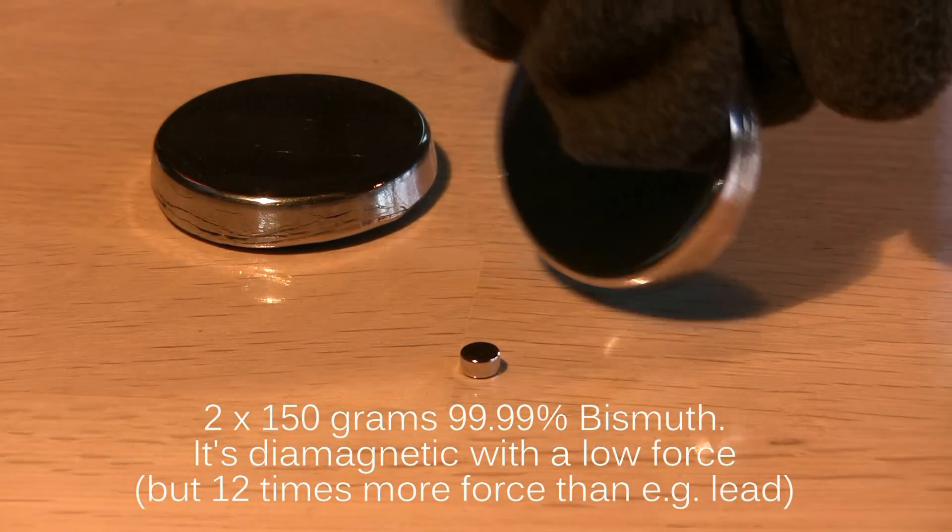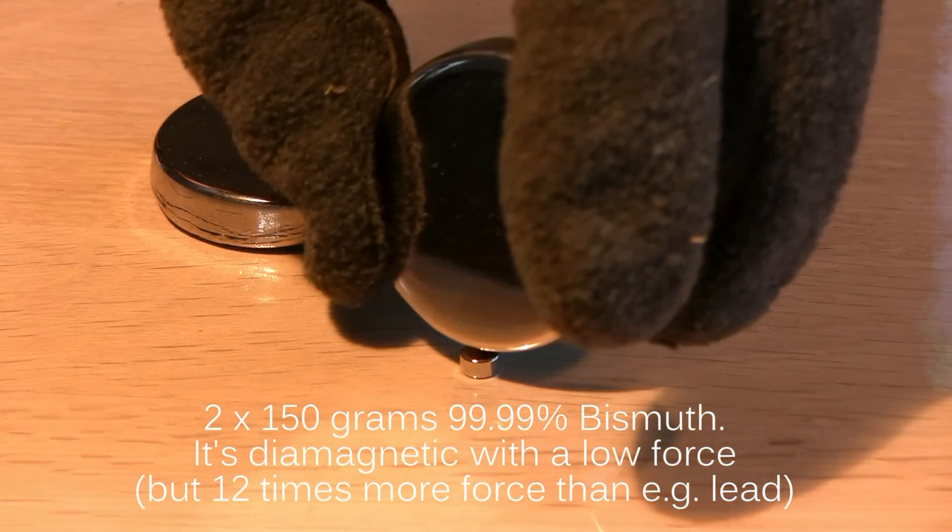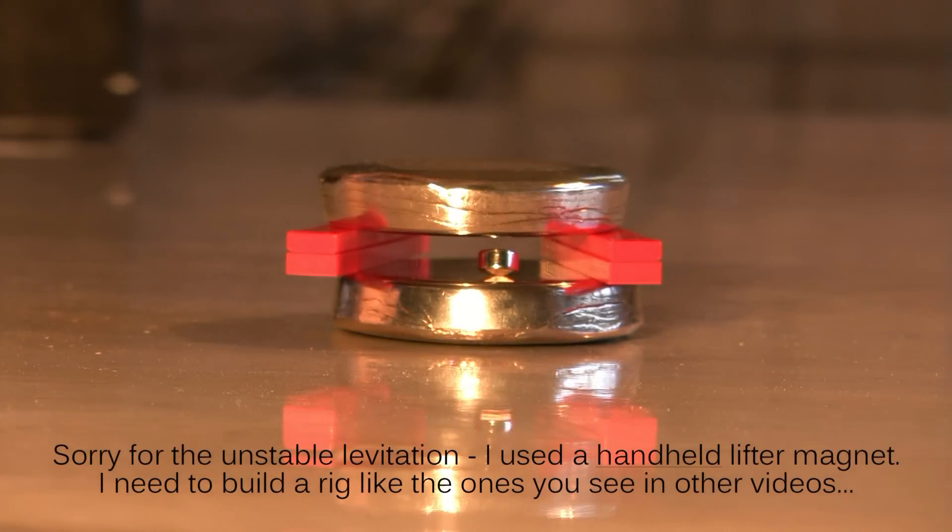In other words, the most diamagnetic metal, bismuth. It is still a very weak repulsion, but it can be used for diamagnetic levitation.